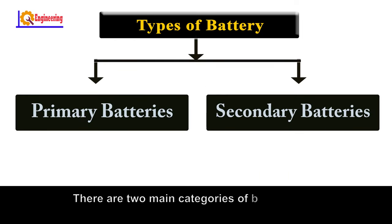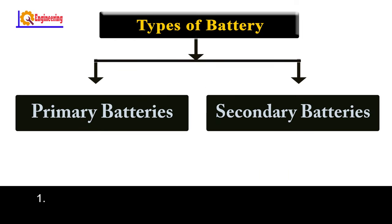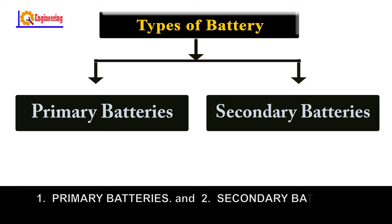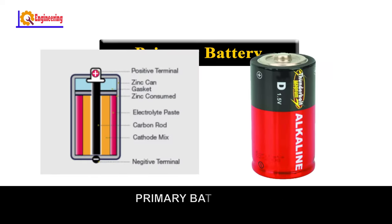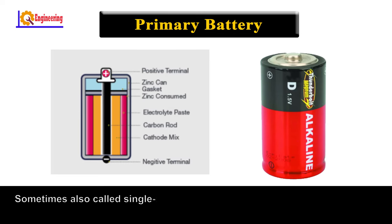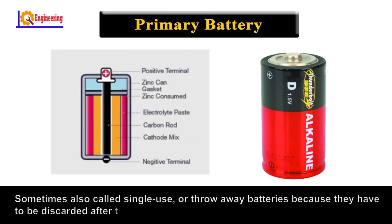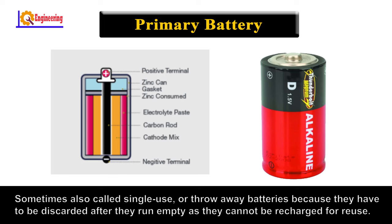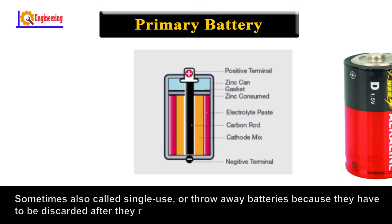There are two main categories of batteries. Number 1: primary batteries and secondary batteries. Primary batteries, sometimes also called single-use or throwaway batteries, have to be discarded after they run empty as they cannot be recharged for use.